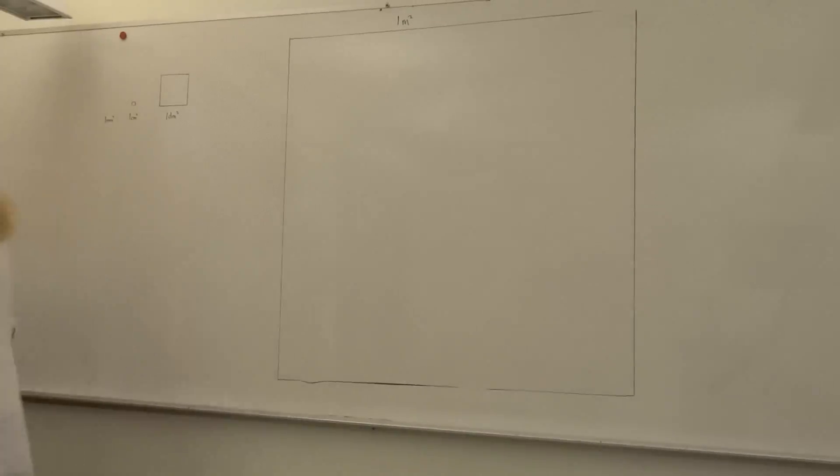Here we have some different shapes that have an area. If you look, you can hardly see it, but there is a tiny little dot here. That dot represents the size of one millimeter square.